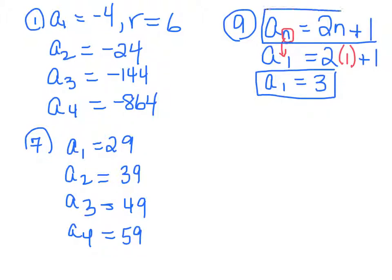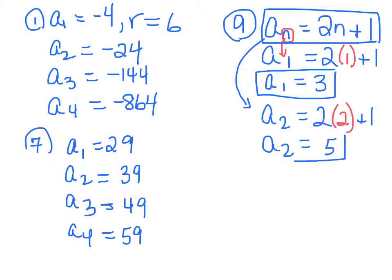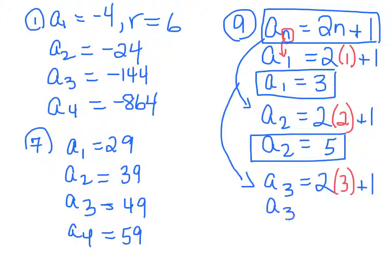Now, you're going to use this formula again to find a sub 2. But now this time, your n would be 2. So wherever you see an n, instead of putting in a 1 this time, you're going to put in a 2. And then you're going to add 1. So your a sub 2 would be 5. And then we're going to just keep going to do your a sub 3. So in this case, your n is 3. So we're going to do 2 times 3 and we are going to add 1. So our a sub 3 would be 7. And then you're going to keep going and you're going to do a sub 4 as well. And your a sub 4, if you plug in n equals 4, you will end up getting 9. And you're going to do that for every section.